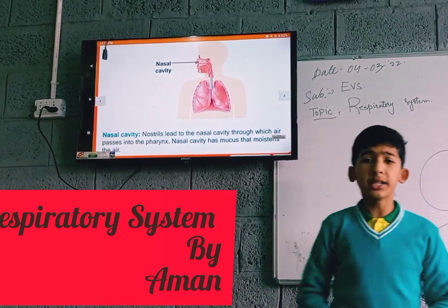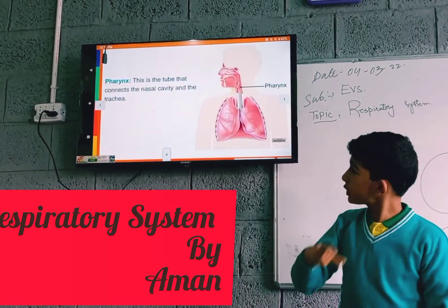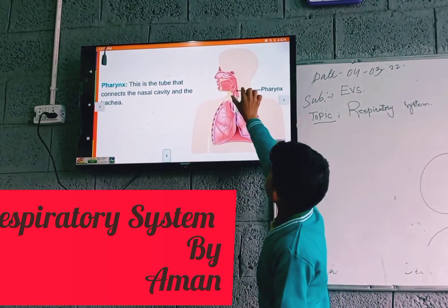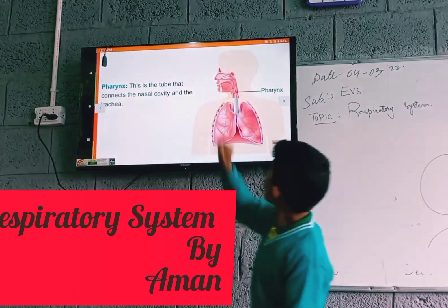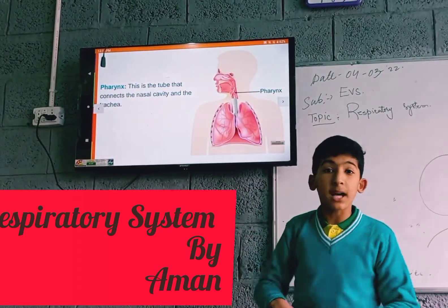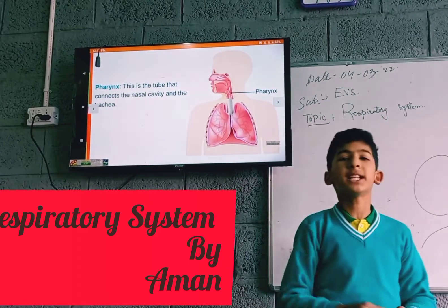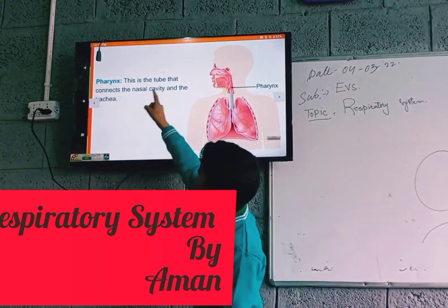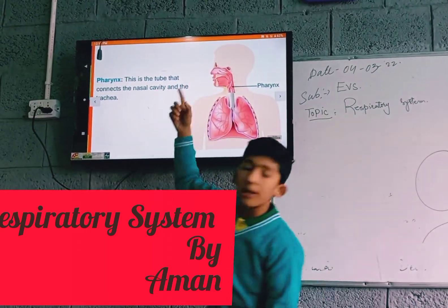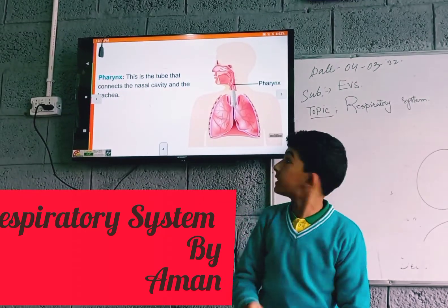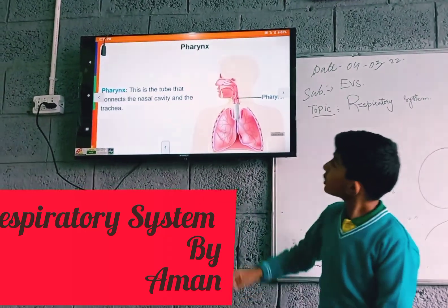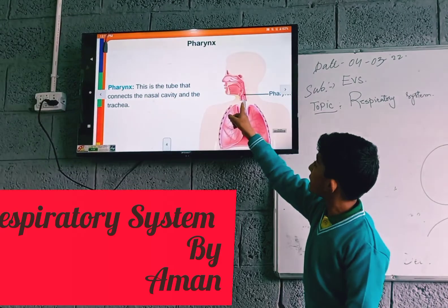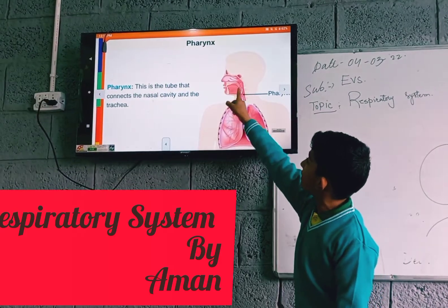The third part is the pharynx. It is a tube. Here you can see the pharynx — it is a tube which connects the nasal cavity and the trachea. It is present between the nasal cavity and the trachea. As you can see in the image, it connects the nasal cavity and the trachea.